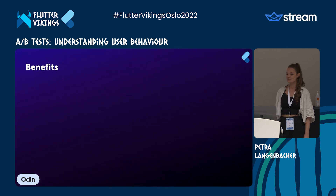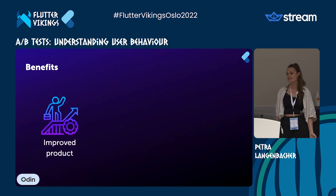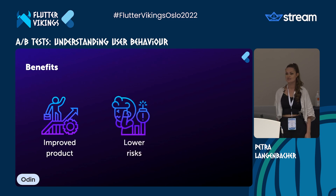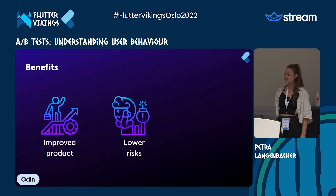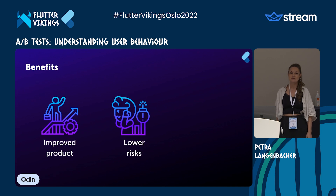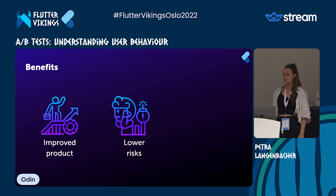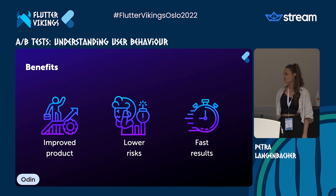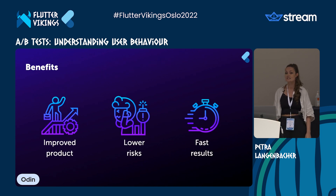So what are the benefits? The most obvious one is that we want to improve our product. Not as obvious, but also really important, is that we want to lower risks. In an app with many users, even small changes can impact the whole user base. So it's helpful to see if a change does not negatively impact performance. Also, A/B tests show results relatively fast, so we can make quick decisions and continue to develop our app further.